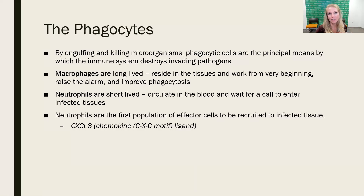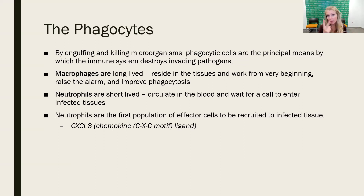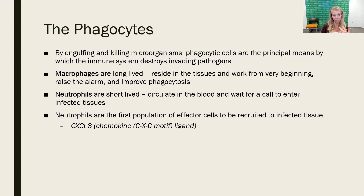The second part of chapter three lecture is everything to do with phagocytes. We're going to look at the two big ones in the innate immune system: macrophages and neutrophils. Phagocytes, by definition, are cells involved in engulfing and then subsequent killing of any pathogens they bring in. Any foreign invaders that get into the tissue will be internalized and then destroyed.